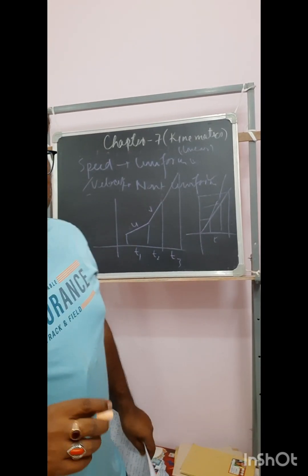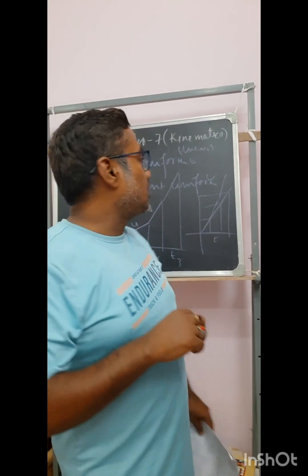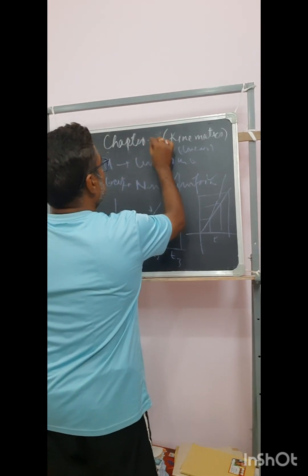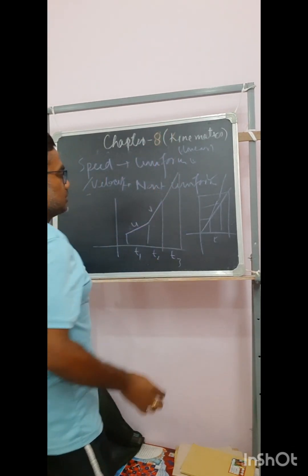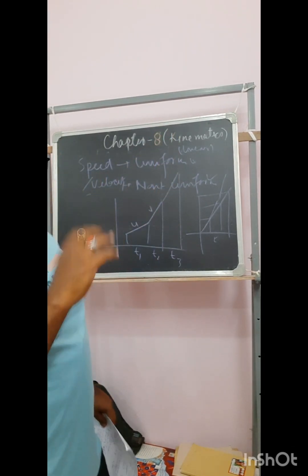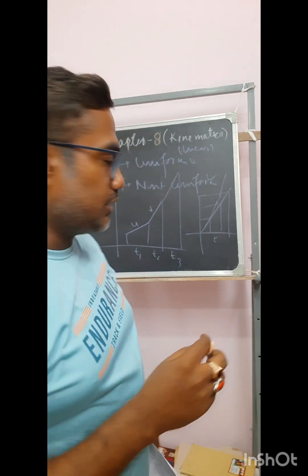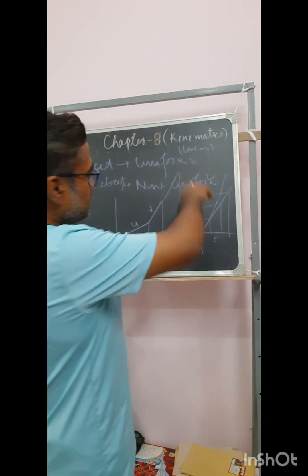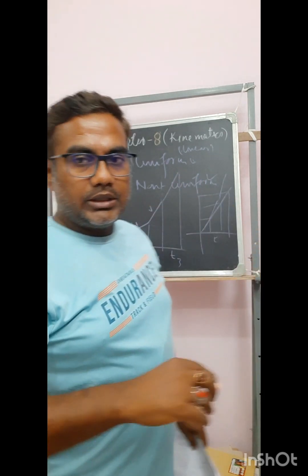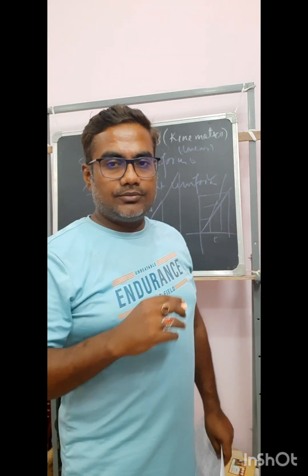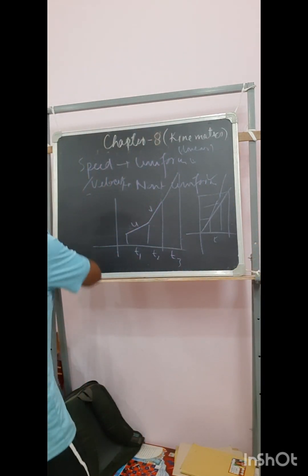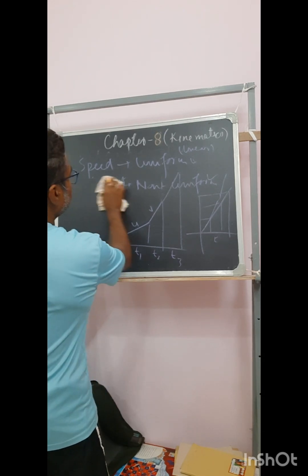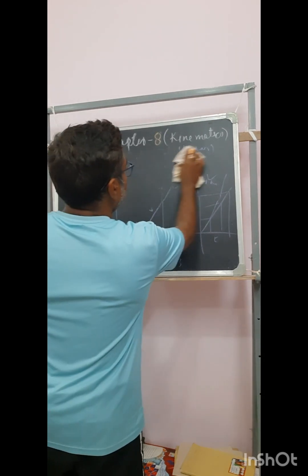Welcome back. As I was discussing in the last class in chapter 7, this is your chapter 8, a continuation of the earlier lecture where I was discussing about the uniformity of speed. So let me explain it further with the graphical method so that it will be pretty much clear for you.